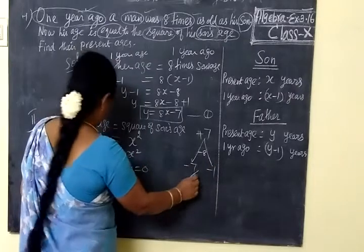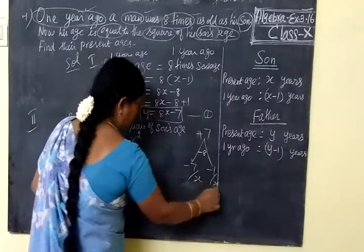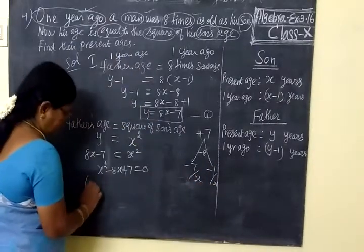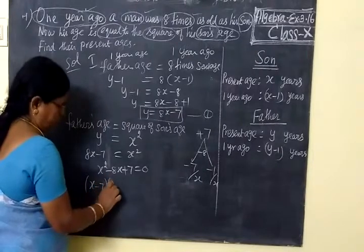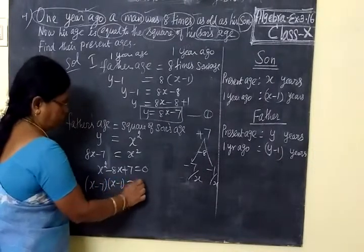So write it as: x minus 7 times x minus 1 is equal to 0.